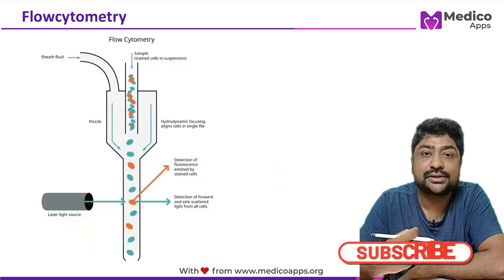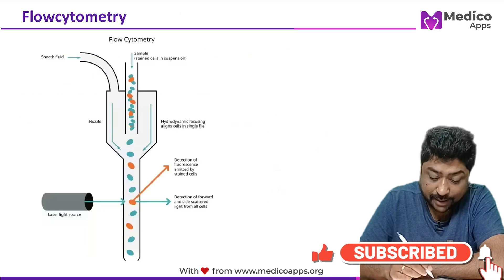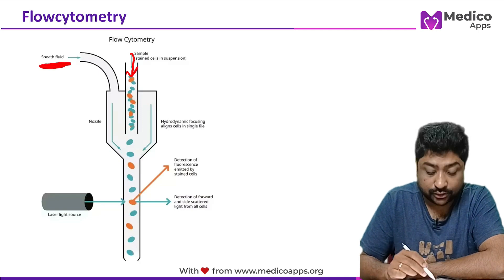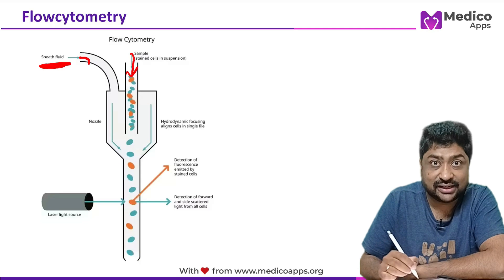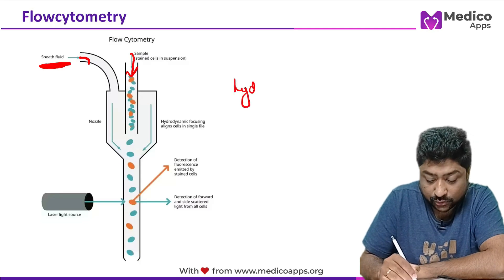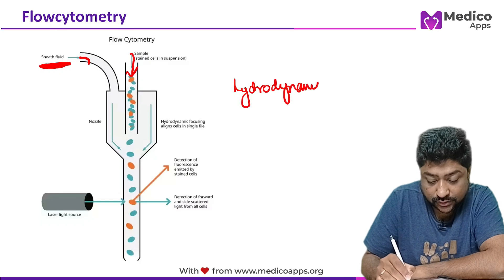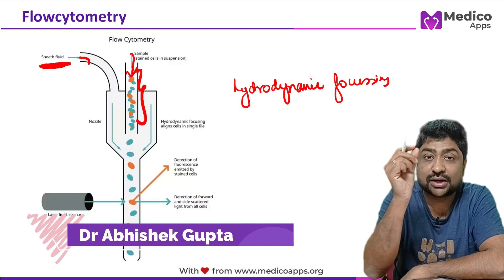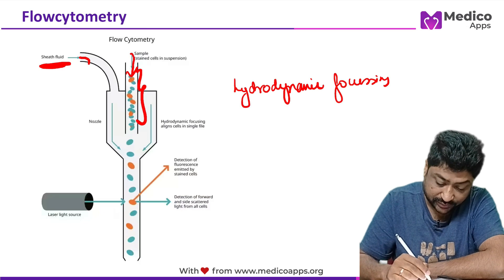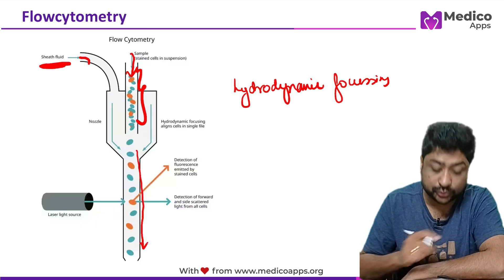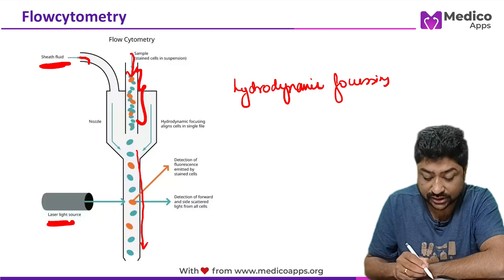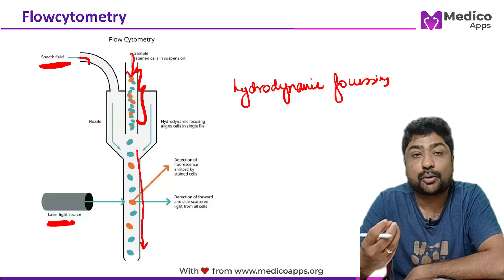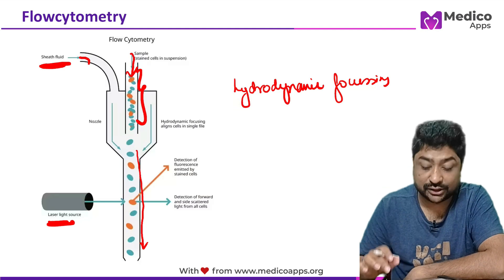Flow cytometry is a technology where the sample is put through an inlet, and a sheath fluid is introduced through another inlet. This causes hydrodynamic focusing, meaning the cells are focused into a single line. Then we have a laser light source, and based on what kind of deflection and scatter pattern we get, we are able to identify the properties of the cells.